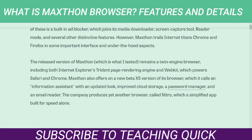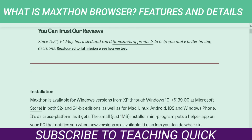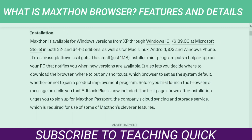The release version of Maxthon remains a twin-engine browser, including both Internet Explorer's Trident page rendering engine and WebKit, which powers Safari and Chrome. Maxthon also offers a new beta version of its browser which it calls an information assistant, with an updated look, improved cloud storage, a password manager, and an email reader. The company produces yet another browser called Nitro, which is simplified for speed alone.